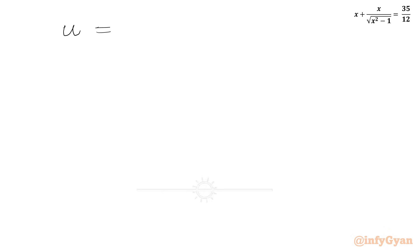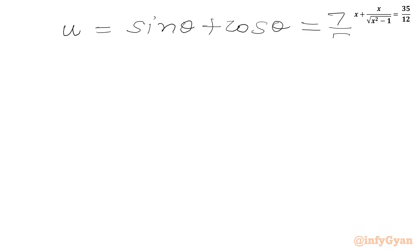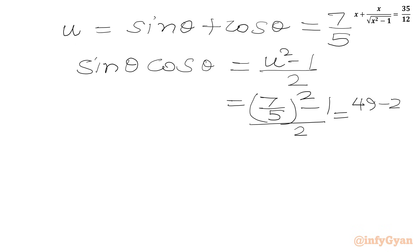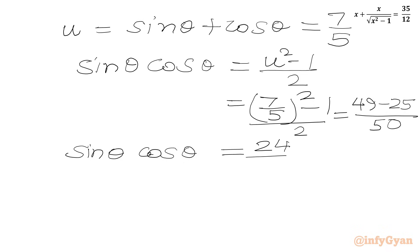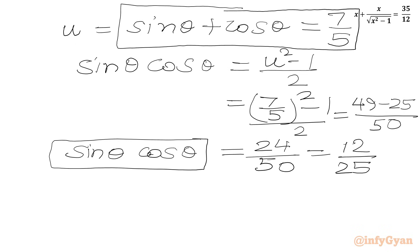So sin θ + cos θ = 7/5. We can now calculate sin θ cos θ = (u² - 1) / 2 = ((7/5)² - 1) / 2 = (49 - 25) / 50 = 24/50 = 12/25. So we have two equations: sin θ + cos θ = 7/5 and sin θ cos θ = 12/25.